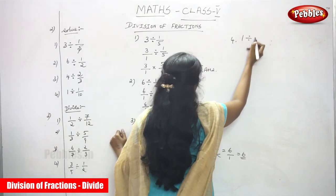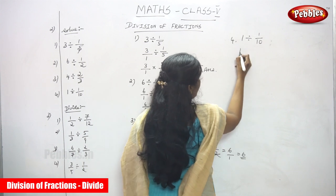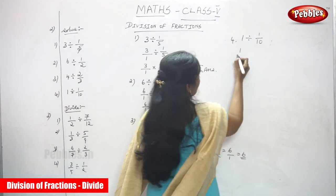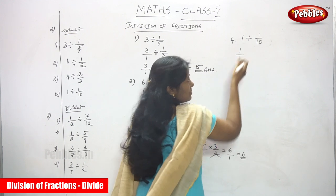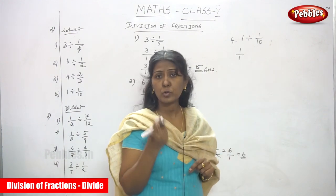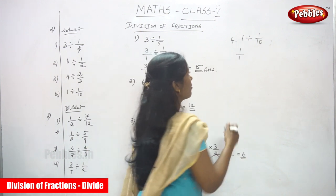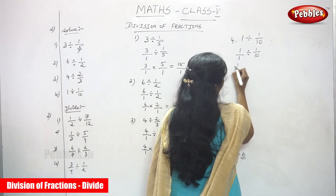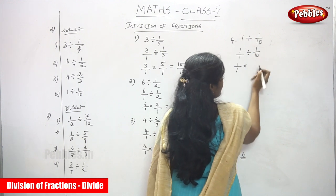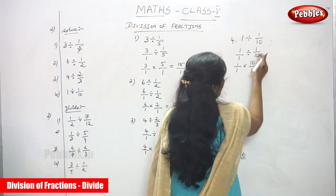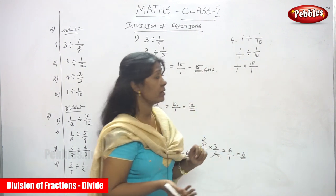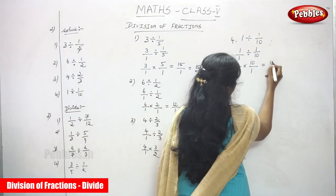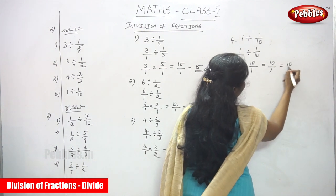Next, fourth sum: 1 divided by 1 by 10. 1 is a whole number. Step 1: make it a fraction — write 1 by 1, since there is no denominator, assume 1 as denominator. Divided by 1 by 10, which is the divisor. Step 2: find the reciprocal of the divisor — 1 by 10 becomes 10 by 1, upside down. Then 1 into 10 equals 10, and 1 into 1 equals 1, so 10 divided by 1 equals 10.